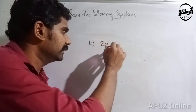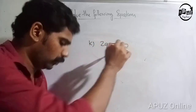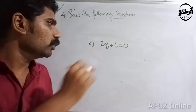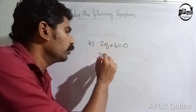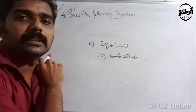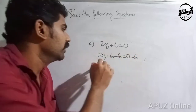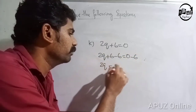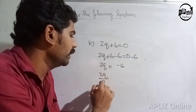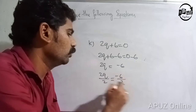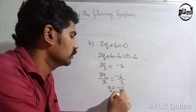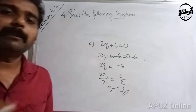Question K: 2q plus 6 is equal to 0. Subtract 6 from both sides: 2q plus 6 minus 6 is equal to 0 minus 6. So 2q is equal to minus 6. Divide by 2: q is equal to minus 3. That is the answer.